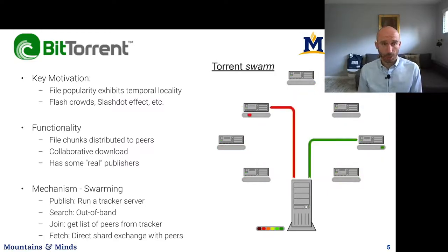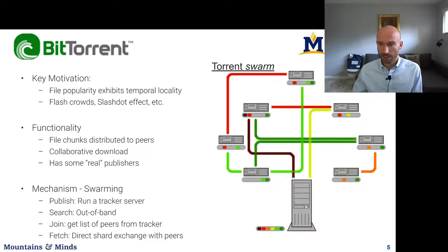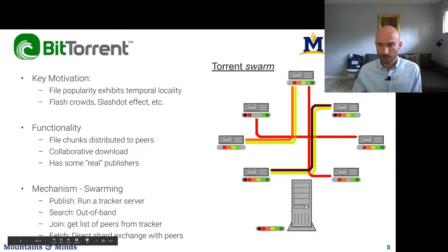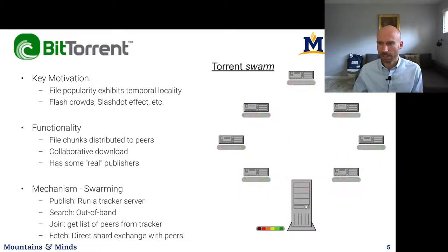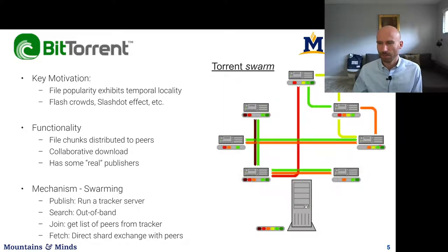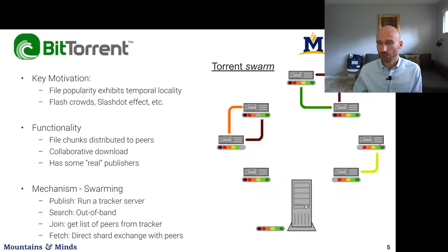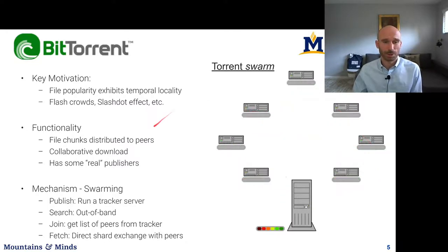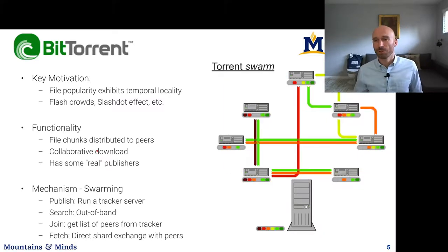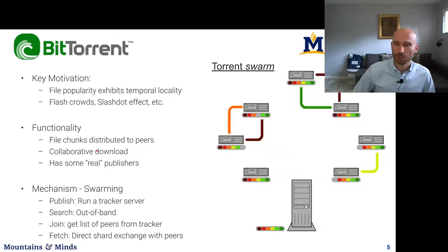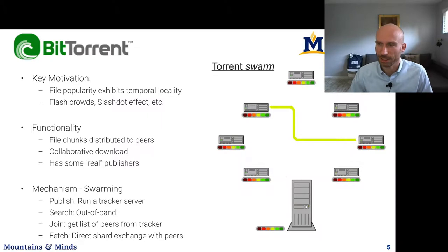The way BitTorrent works is you take a file and divide it into chunks. Clients start downloading the file from the server, add a chunk to their storage, and now they can send that chunk to somebody else in the network. This becomes a collaborative download. Even though BitTorrent has been used for piracy, it does have some real publishers, so it is difficult to block legally en masse.